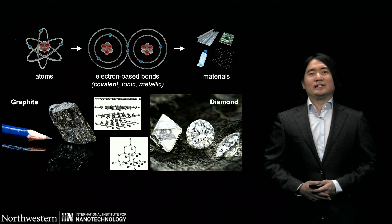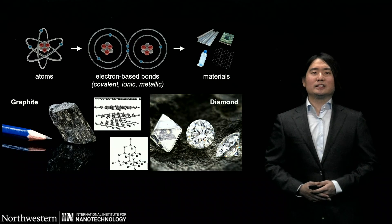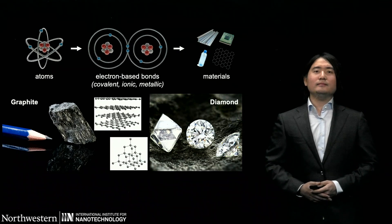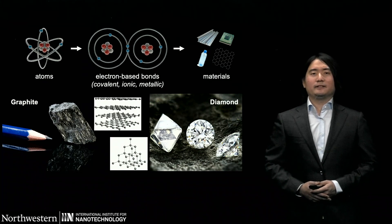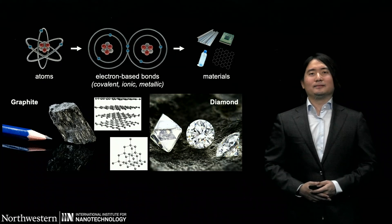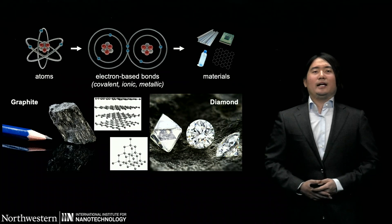Nature uses chemical bonds to arrange atoms, and so taking inspiration from nature, we wonder if we can arrange material building blocks just like atoms, but on a much bigger scale. To answer this question, we need to take a closer look at the nature of chemical bonds. These bonds are formed by the pairing of electrons between atoms, and the formation is highly specific — it's almost like a group of atoms talking with each other, deciding the best way to form chemical bonds, and order emerges as the final outcome.